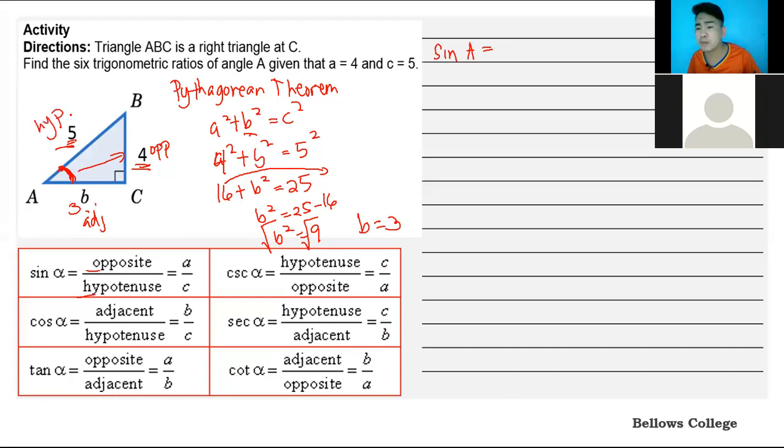Sine A is opposite, so it's 4 over 5. Cosine A is adjacent over hypotenuse, 3 over 5. Tangent A equals opposite over adjacent, 4 over 3.